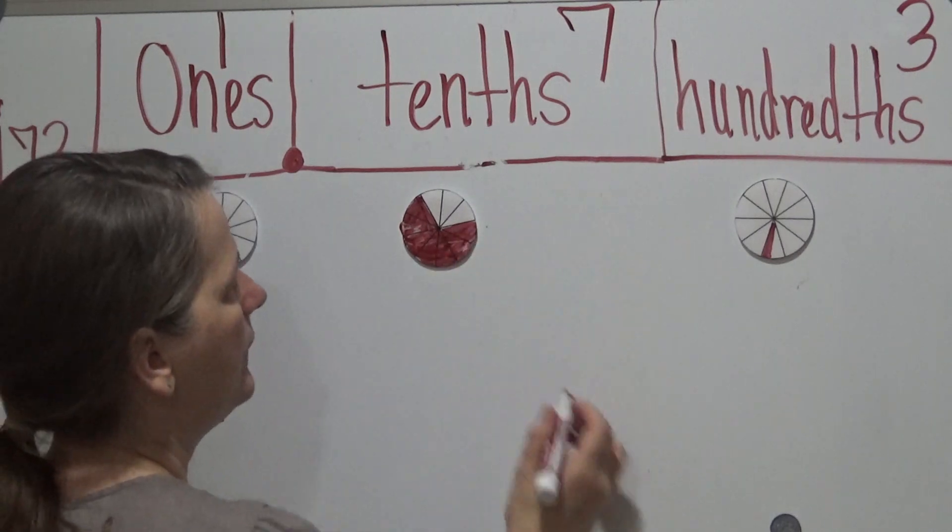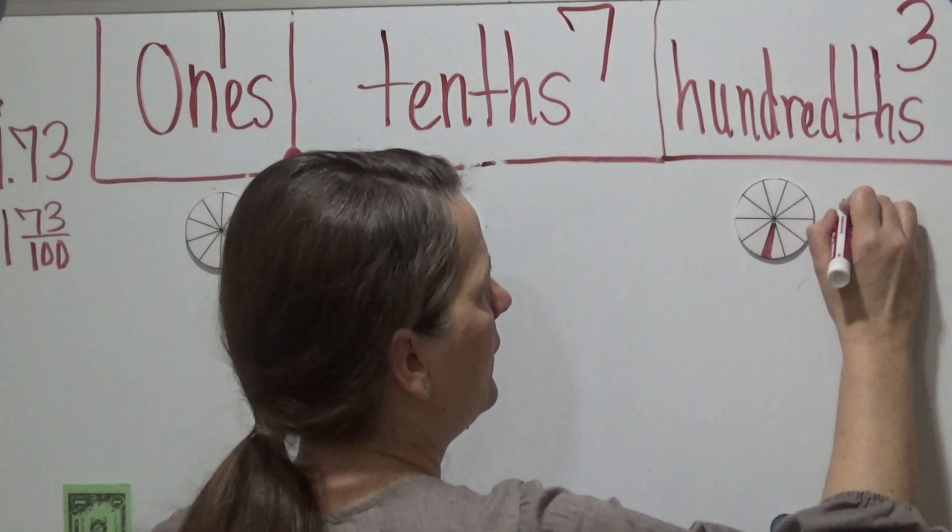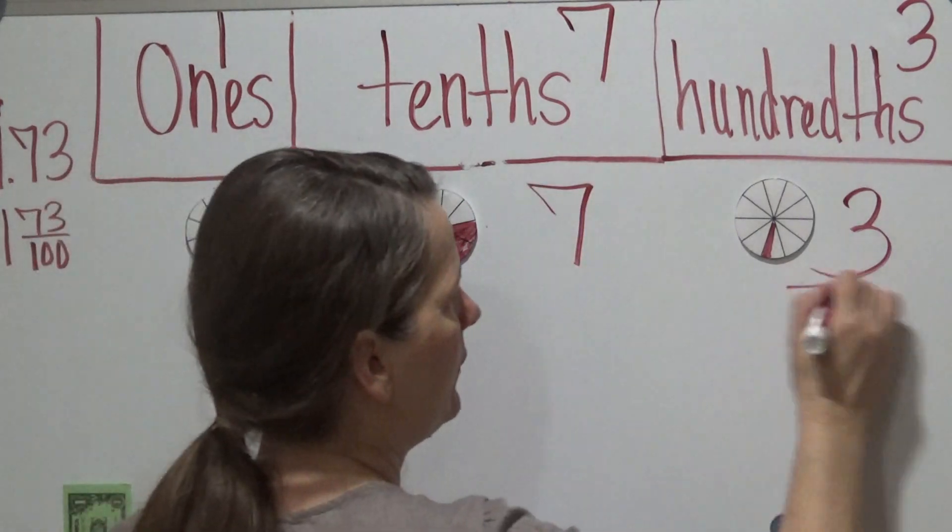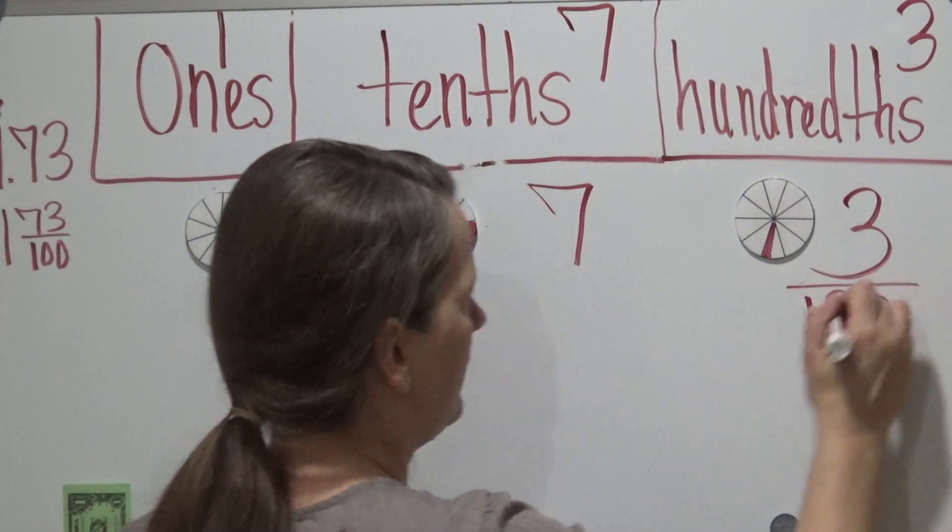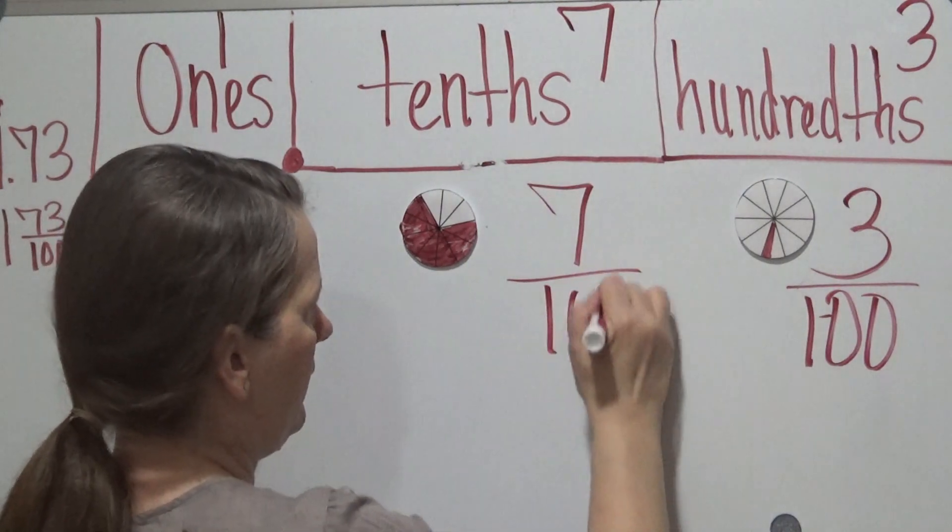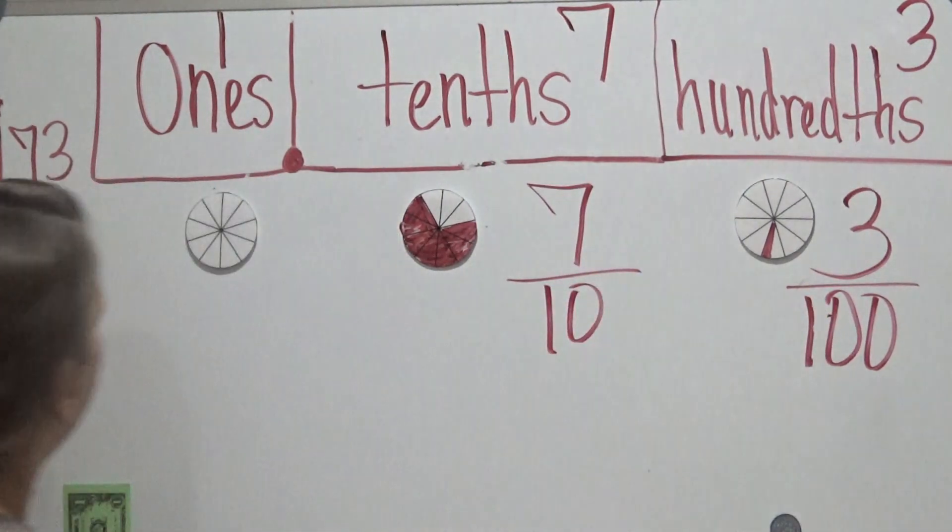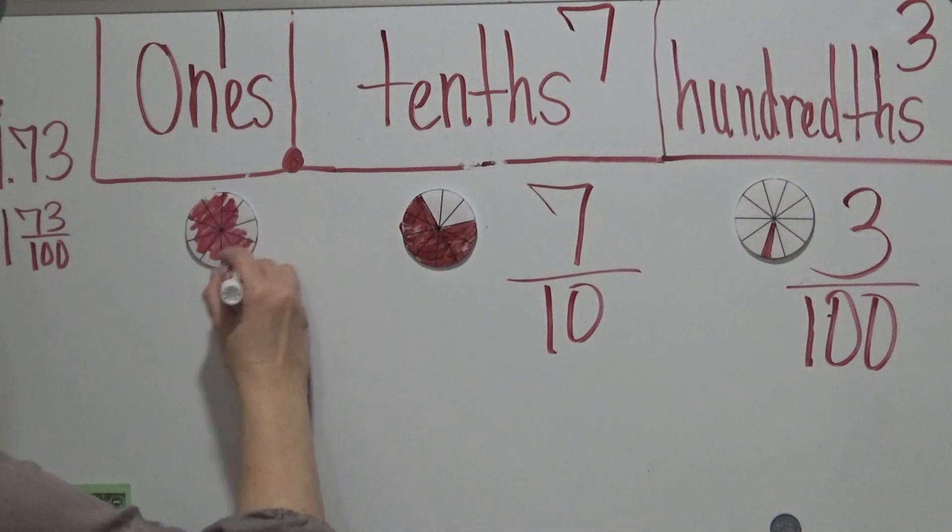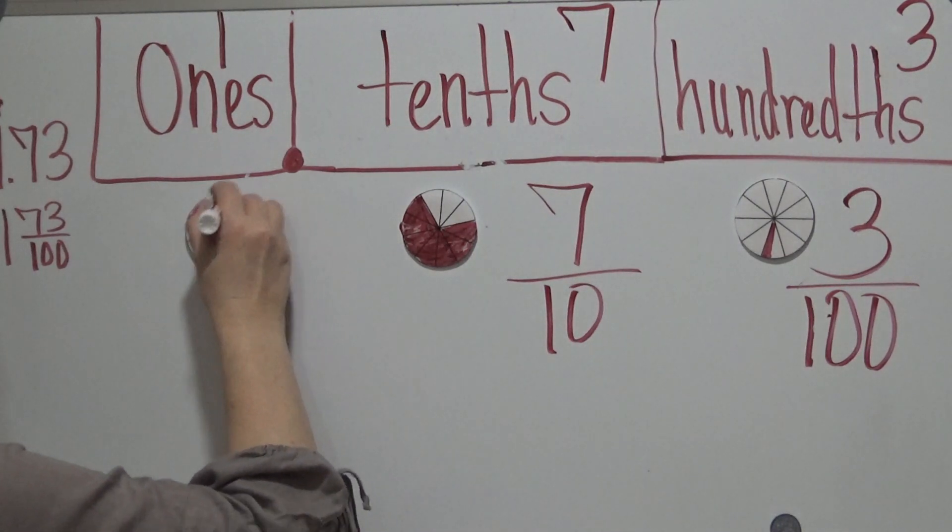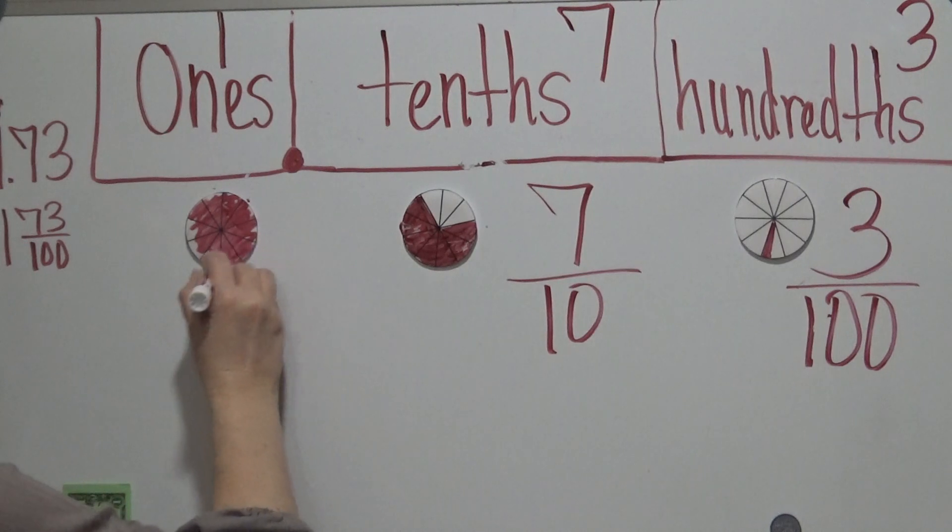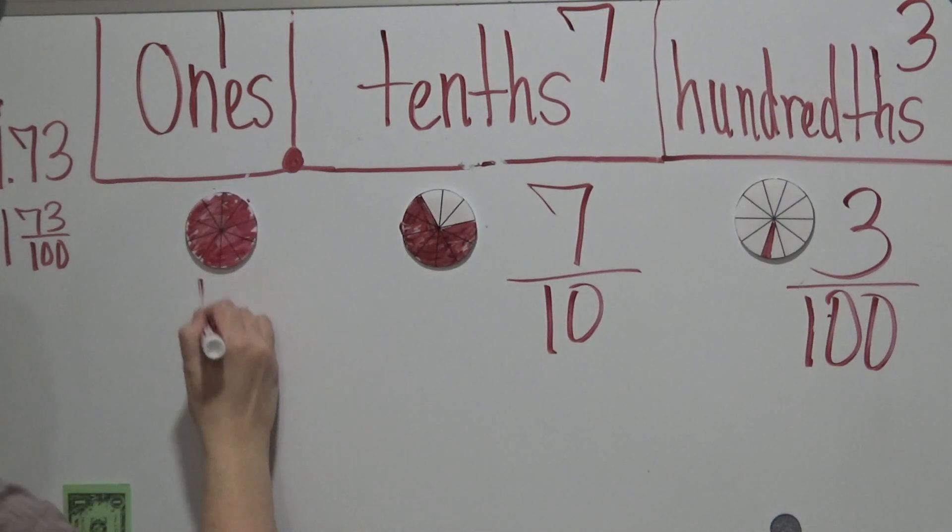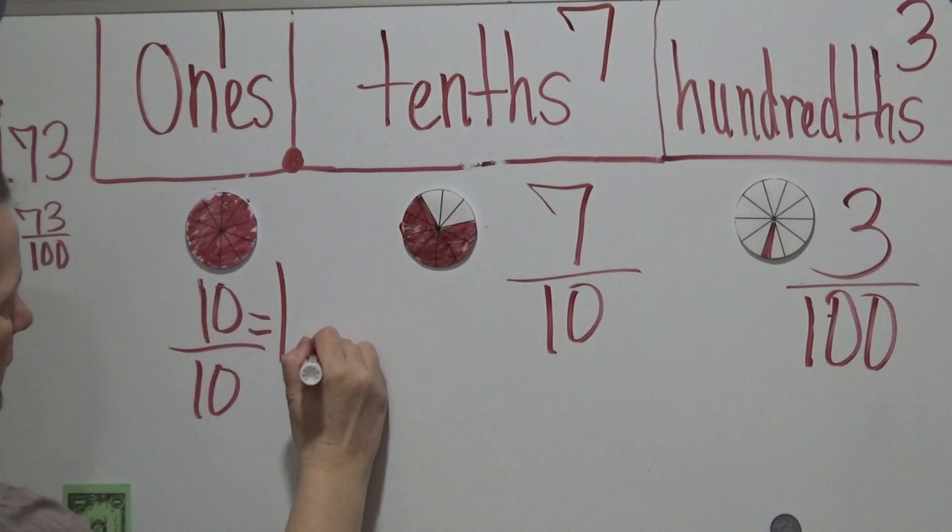Eventually, I'm going to have, so this is 3. This is 7. So 3 out of 100, 7 out of 10. This whole thing is shaded in, which is 10 out of 10, which is equivalent to one whole.